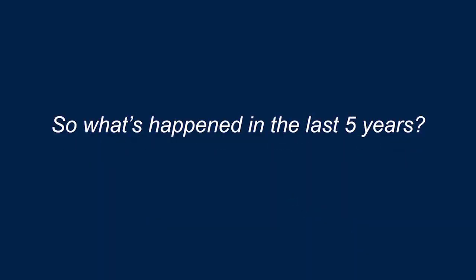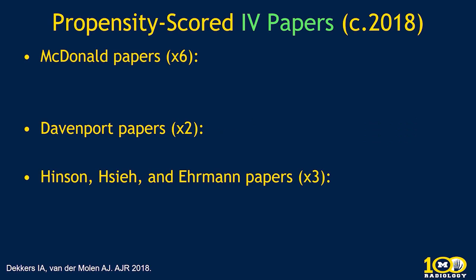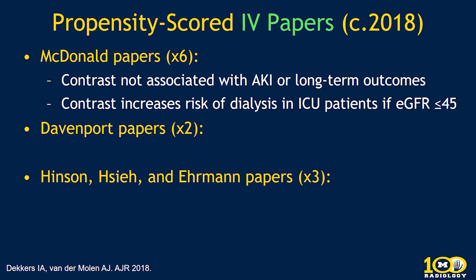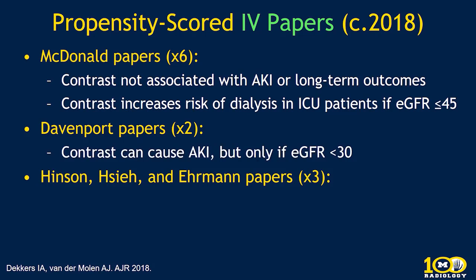Over the last five years, a whole slew of papers have used propensity score matching or adjustment to control for selection bias. Around six papers by the Mayo Group found that contrast was not associated with acute kidney injury or long-term outcomes — essentially no evidence of CIN. However, paradoxically, they did see that contrast administration increases the risk of dialysis in ICU patients if eGFR was below 45. Two papers from Michigan found contrast can cause AKI, but only if kidney function is very poor — CKD stage four or five. Three other papers found no association. These all represent IV administrations.